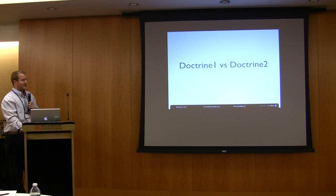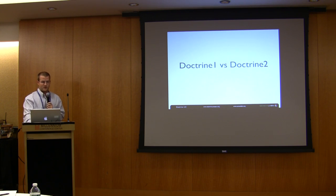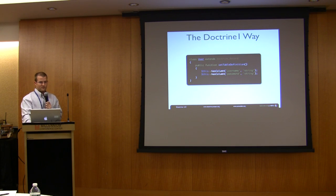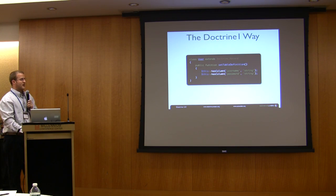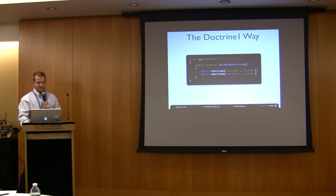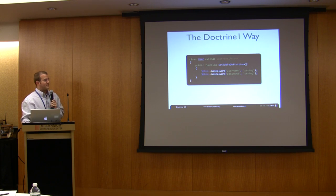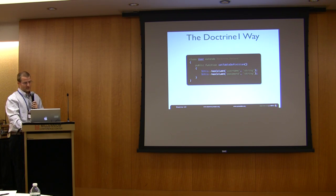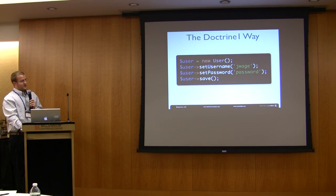So before I actually talk about Doctrine 2, I want to show you some differences between Doctrine 1 and Doctrine 2. This is what a model would look like in Doctrine 1. I'll point out a few things. You notice how we have to extend a base class called Doctrine_Record. And we also have to have this method, public function setTableDefinition.